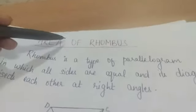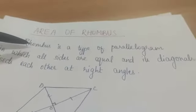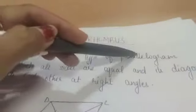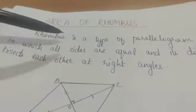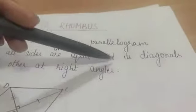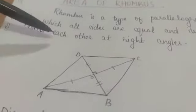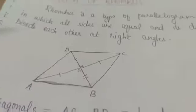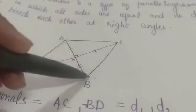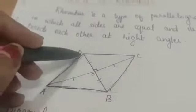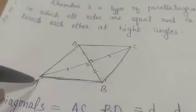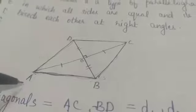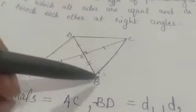Area of rhombus. What is a rhombus? A rhombus is a type of parallelogram in which all sides are equal and its diagonals bisect each other at right angles. That means rhombus is a parallelogram where AB equals BC equals CD equals DA.